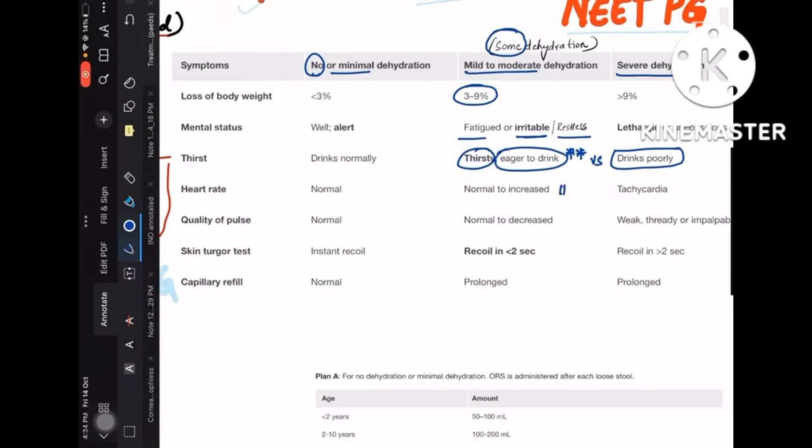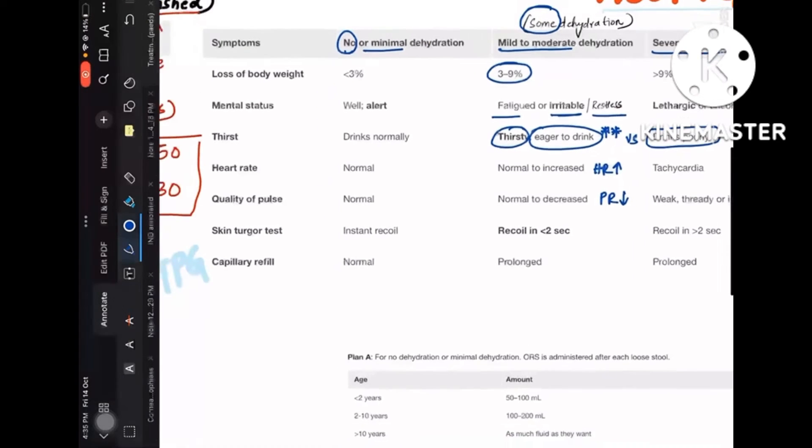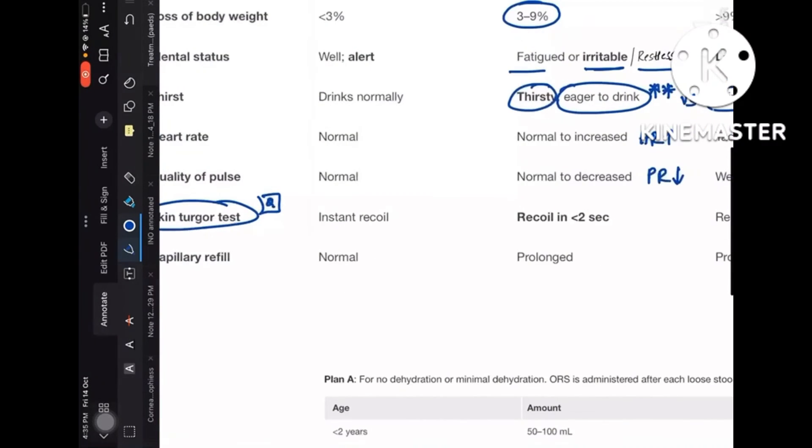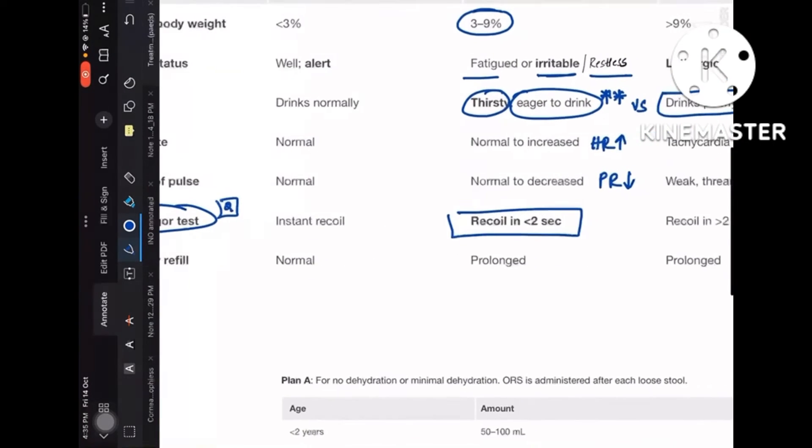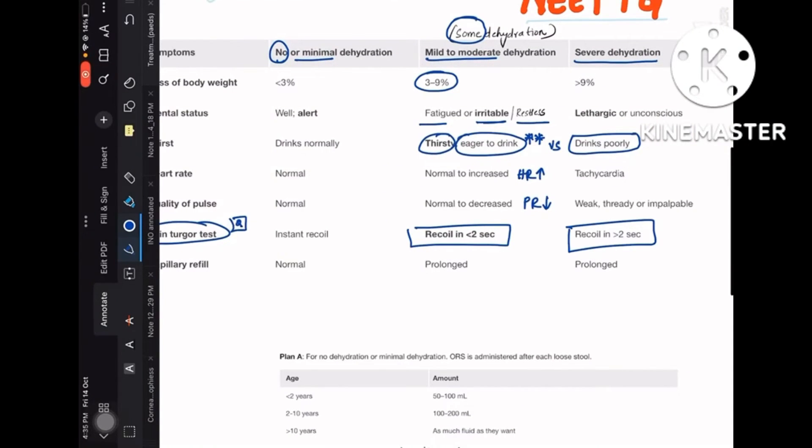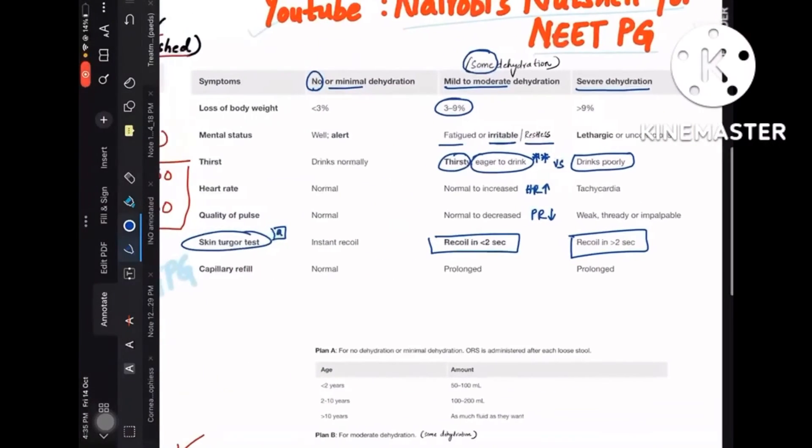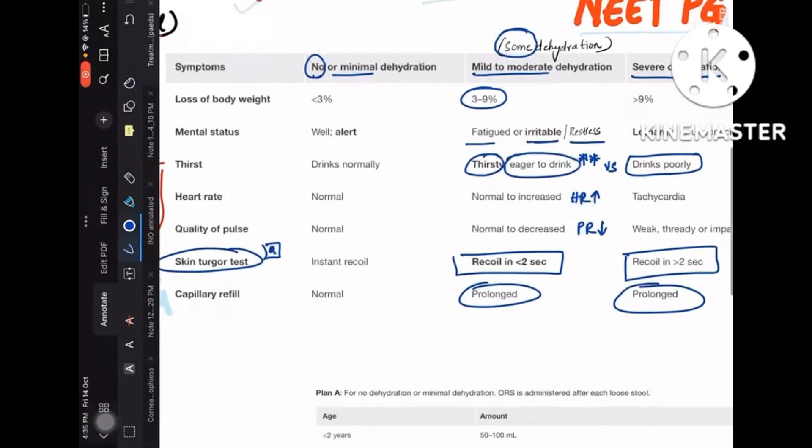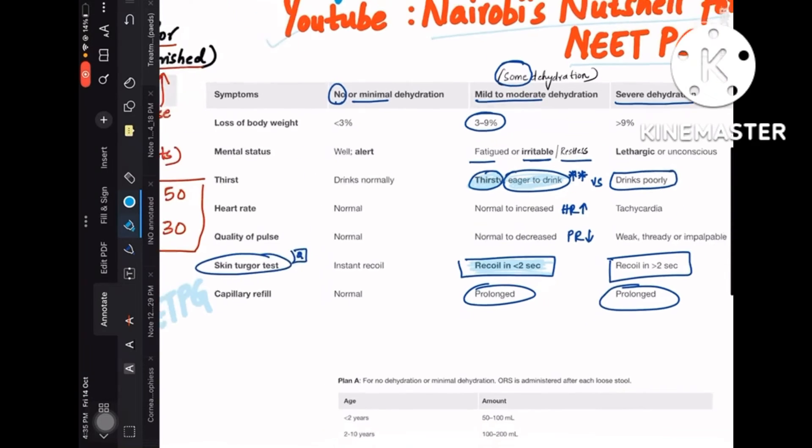Coming to the heart rate, heart rate is increased, whereas pulse rate is decreased. Coming to skin turgor test, this is one of the most important clincher points: recoil of the skin when you pinch it is less than 2 seconds in some dehydration and greater than 2 seconds in severe dehydration. And capillary refill time is prolonged in both mild to moderate and severe dehydration. So the clincher points here that you need to remember are thirsty and eager to drink, and recoil is less than 2 seconds.